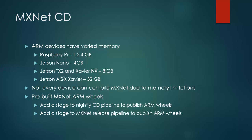ARM devices have varied memory — Raspberry Pi comes in 1, 2, and 4 GB; Jetson Nano has 4 GB; Jetson TX2 and Xavier NX both have 8 GB RAM; and Jetson AGX Xavier comes in 32 GB RAM. Not every device can compile MXNet due to memory limitations, hence we need pre-built MXNet ARM wheels. Currently we don't have a CD stage to publish ARM wheels. Going forward, we can add a stage to the Nightly CD pipeline to publish these wheels, and also add a stage to the MXNet release pipeline to publish ARM wheels for each release.